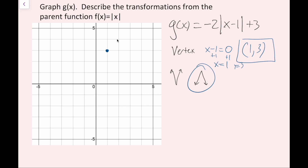The last thing is the slope. The slope is going to be positive and negative because it goes in both directions — I know it's going to be an upside-down V. I have this 2 that's being multiplied by my absolute value expression, so that is going to be my slope: plus or minus 2.